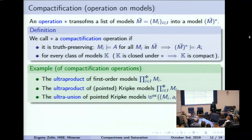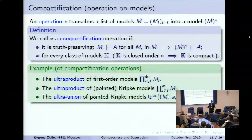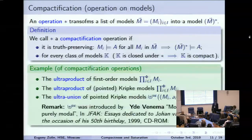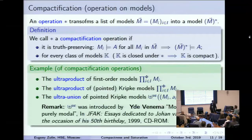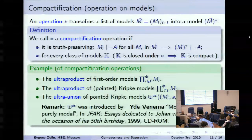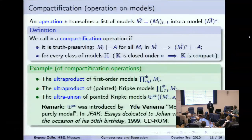The ultraunion is an operation applied to a family of pointed Kripke models: we take the disjoint union of Kripke models, take the ultrafilter extension of this, and some specific distinguished point in this big model. This operation was introduced by Yde Venema in a paper in 1999 at a conference dedicated to the 50th anniversary of Johan van Benthem. Today we can celebrate the 20th anniversary of this notion.